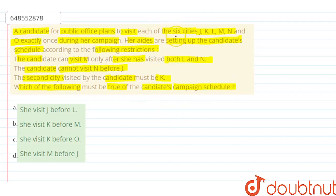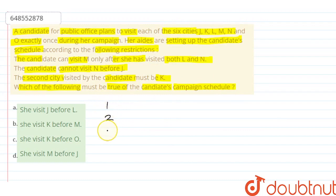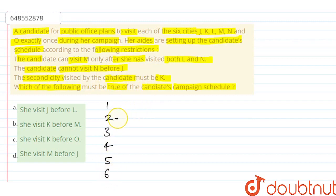Okay guys, we have given 6 cities. I will number them: 1, 2, 3, 4, 5, and 6. Now, the second city visited by the candidate must be K, so K is in second place.